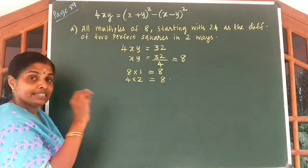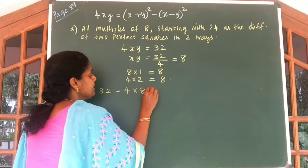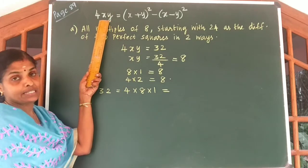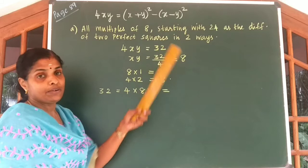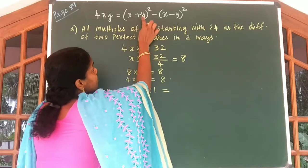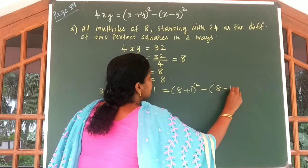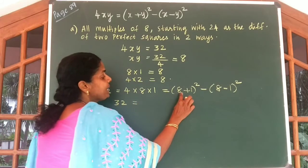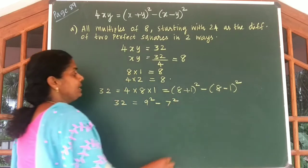Now let us write 32. We can write 32 is equal to 4 into 8 into 1, which is equal to x plus y whole square minus x minus y whole square. That is, 8 plus 1 whole square minus 8 minus 1 whole square. So 32 is equal to 9 square minus 7 square.